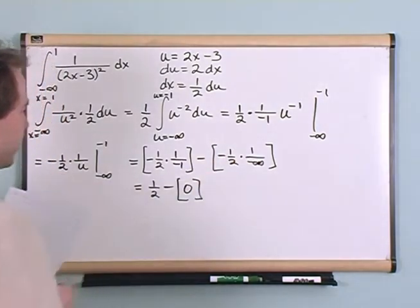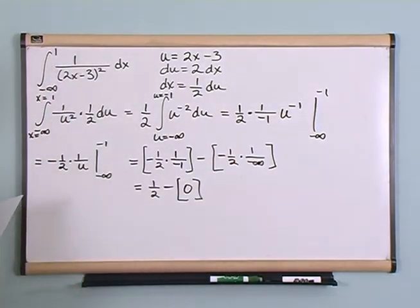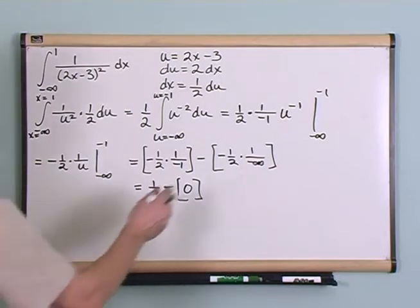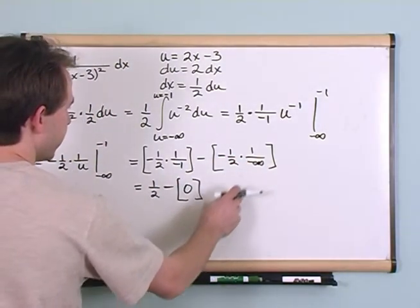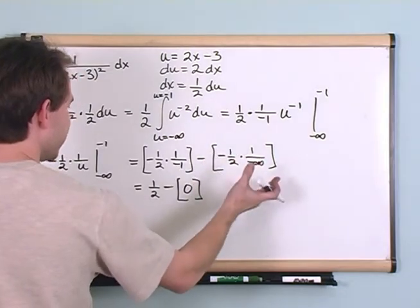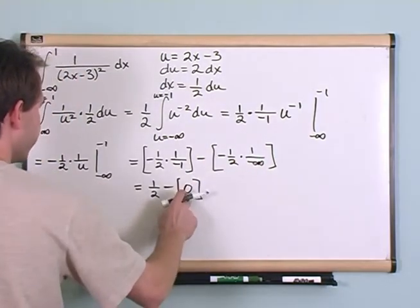Anything divided by infinity gives you zero, okay. So the negative times negative gives you positive, and then anything divided by infinity gives you zero, so you have this.